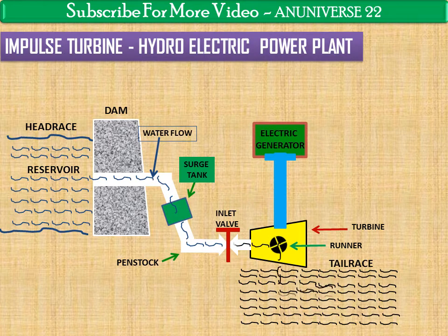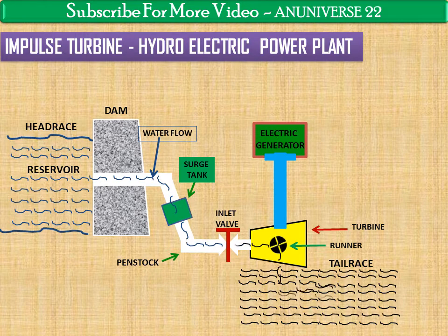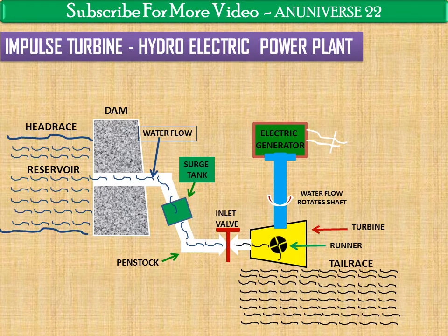This is an electric generator that is coupled with the help of a shaft. The mechanical energy is used to run an electric generator, which is directly coupled to the shaft of the hydraulic turbine. When the runner rotates, the shaft of the generator — which is connected to the runner — also starts to rotate. With the help of the electric generator, electric power is transmitted to the transformer.